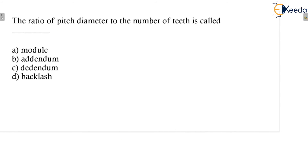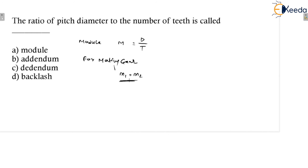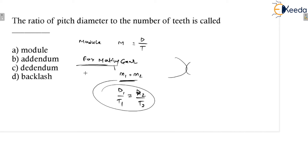The next question: the ratio of the pitch diameter to the number of teeth. This is again a simple gear terminology question. Pitch circle diameter is represented as D and number of teeth as T, so D divided by T is nothing but the module M. For mating gears, M1 equals M2, meaning D1 divided by T1 equals D2 divided by T2 — for example when a gear and pinion are in mesh. So option A is the correct answer.